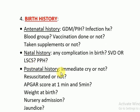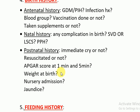For the postnatal history, you would ask whether the child cried immediately after birth, whether the child was resuscitated at that time, and the APGAR score at one minute and five minutes. You would also ask the weight at birth, whether the child was admitted to the nursery, or if there was any other problem after birth.